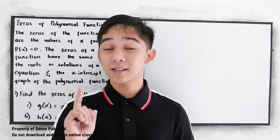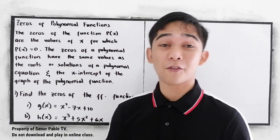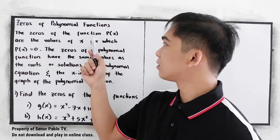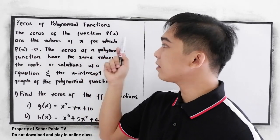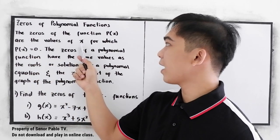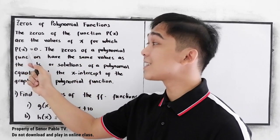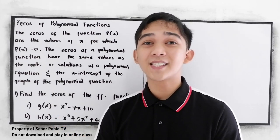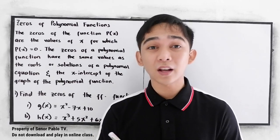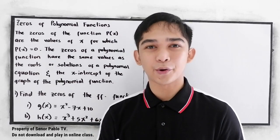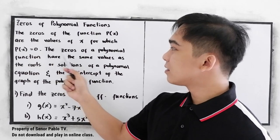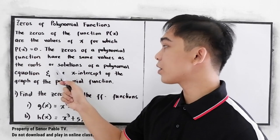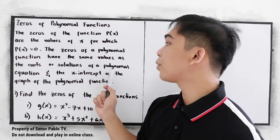First, let us define what are the zeros of polynomial functions. The zeros of a function, or the zeros of the function p of x, are the values of x for which p of x is equal to zero. So these are the values of x that will make our function equal to zero. The zeros of a polynomial function have the same values as the roots or solutions of a polynomial equation.